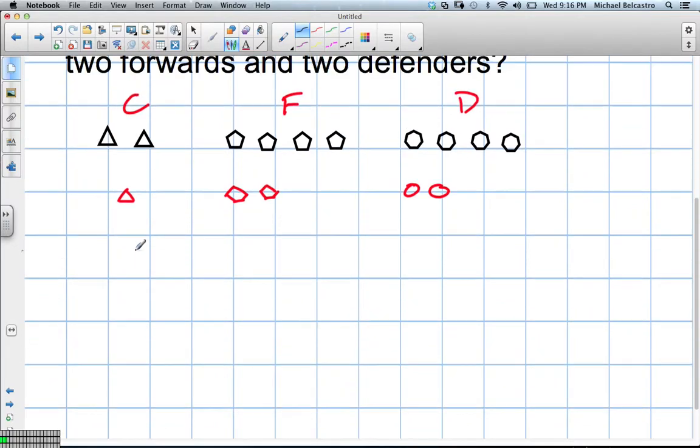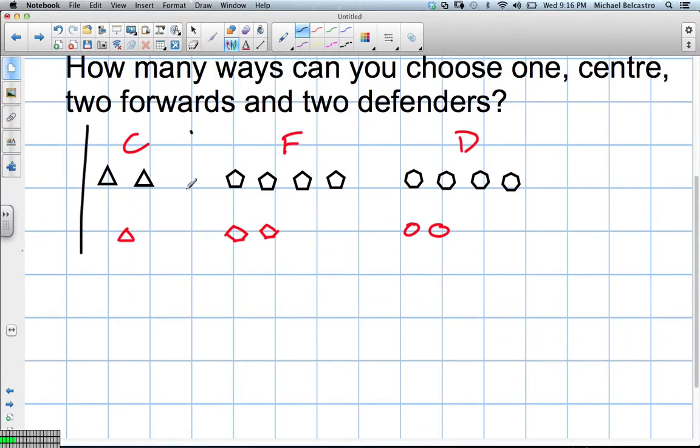So for each of the three questions, or each of the three options, there's going to be a different combination. We already know, because there's a possible of two, we're going to be doing two, and there's only one option we're taking. So two choose one for the first set.